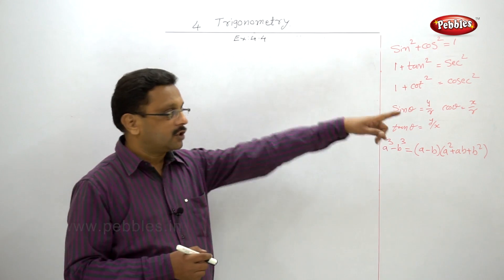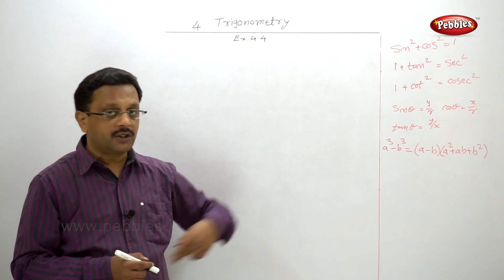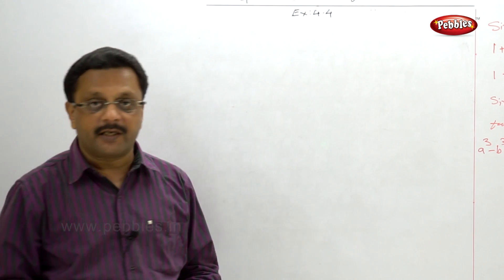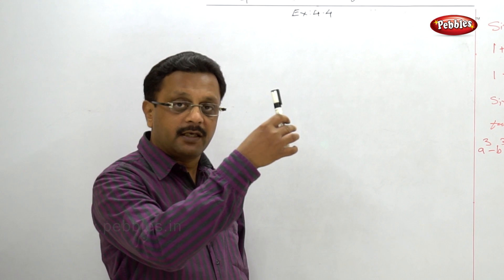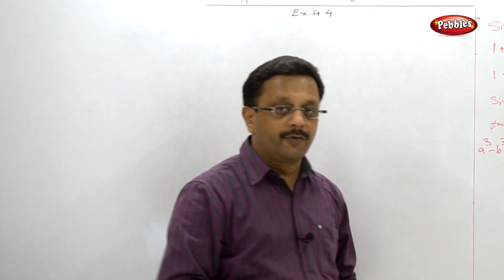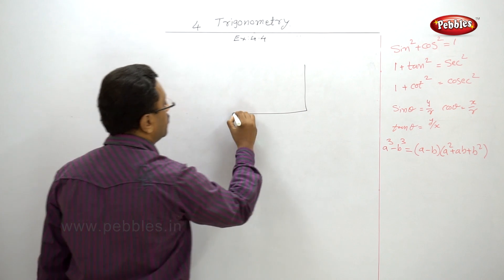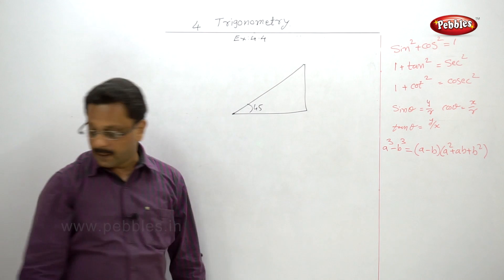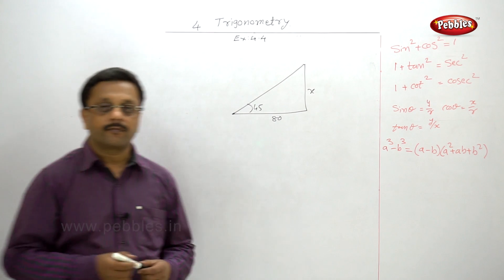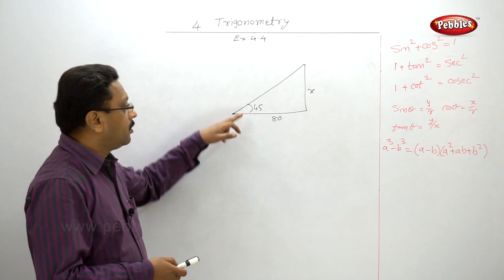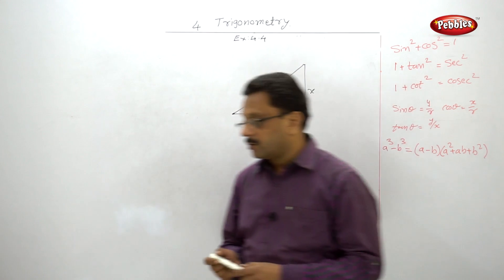First example: a person standing at a distance of 80 meters from the church. Draw the church first. The angle of elevation of its top is 45 degrees — meaning when looking at the top of the church, this angle is 45 degrees. Find the height of the church. Please pause your video and draw the figure first. Now tan 45 = x/80. Tan 45 is 1, so x is also 80.